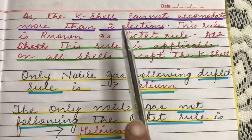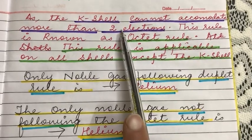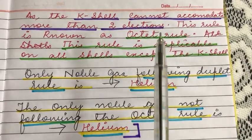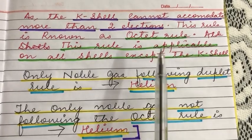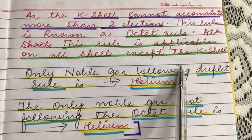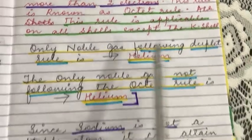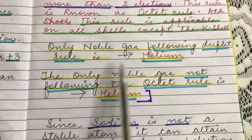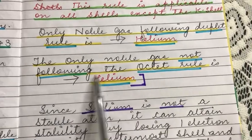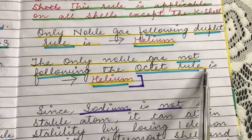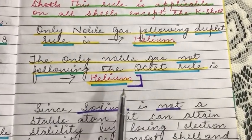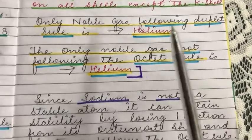This rule is applicable on all shells except for the K shell, since it has a capacity of only two electrons. The only noble gas following the duplet rule is helium, and the only noble gas not following the octet rule is also helium.